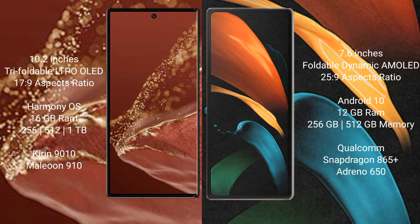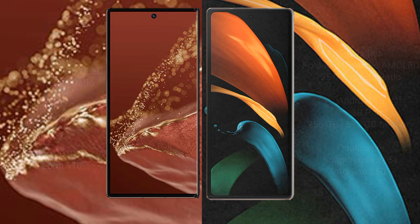The Wahabamate XT Ultimate runs on the HarmonyOS operating system, while the Samsung Galaxy Z Fold 2 runs on Android 10. The Wahabamate XT Ultimate comes with 16GB RAM and 256GB, 512GB, or 1TB internal storage, powered by a Kirin 910 processor with an 8GP 910 GPU. The Samsung Galaxy Z Fold 2 comes with 12GB RAM and 256GB or 512GB internal storage, powered by a Qualcomm Snapdragon 865 Plus processor with an 8GP 11650 GPU.